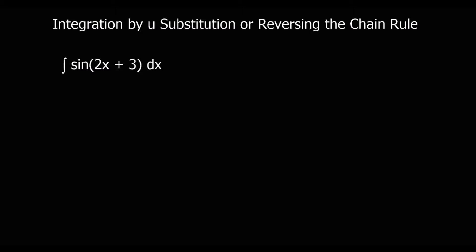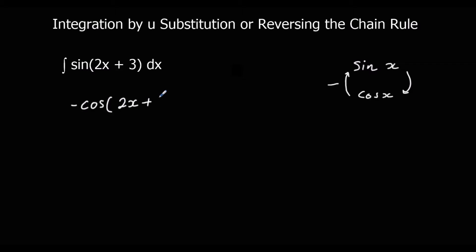So here we've got a question — we've got to integrate sin with respect to x. If we remember, when we differentiate we go around clockwise, and when we integrate we go anti-clockwise. So sin is going to go to negative cos, and we're going to keep the angle the same. But when we differentiate we multiply by the bracket differentiated, so when we integrate we're going to do the opposite — we're going to undo that.